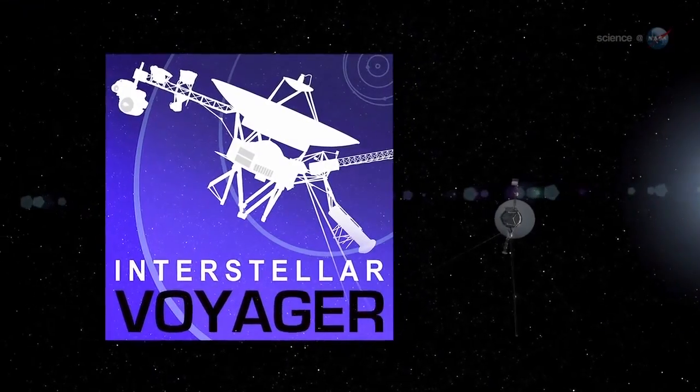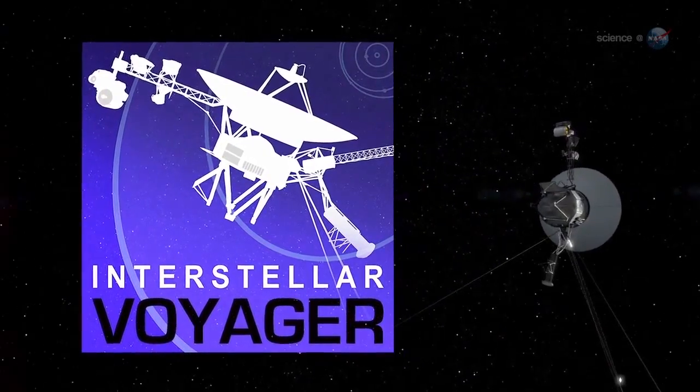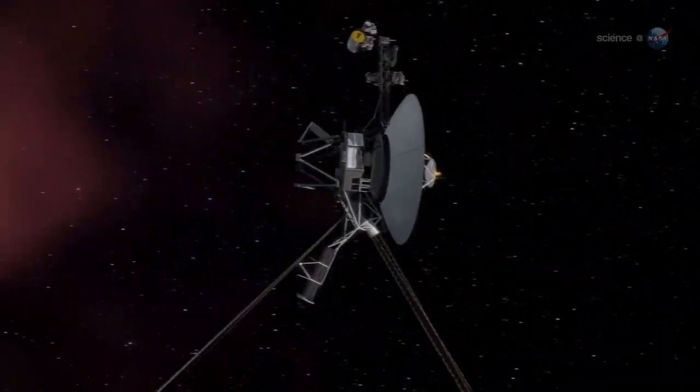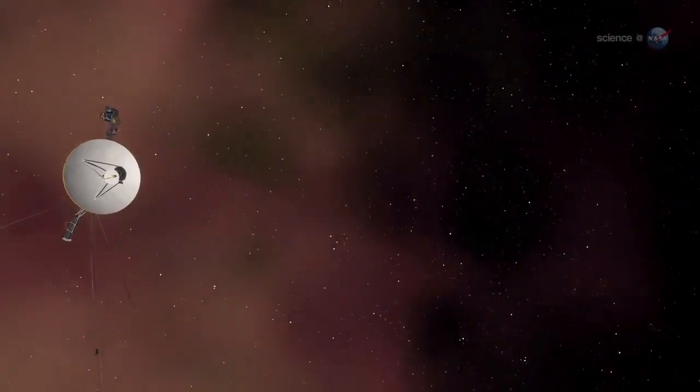When NASA sent the Voyager probes to find the edge of the Sun's magnetic field, it took them nearly 40 years to get there. Turns out, that's nothing.